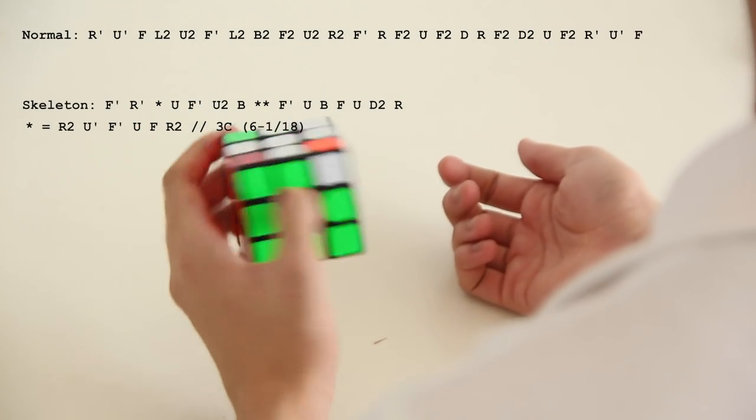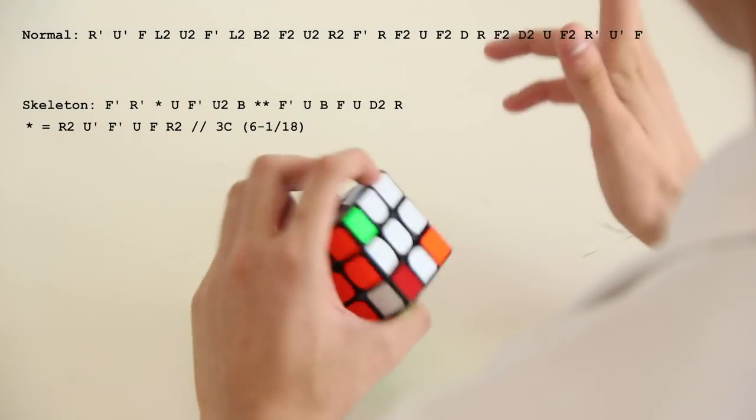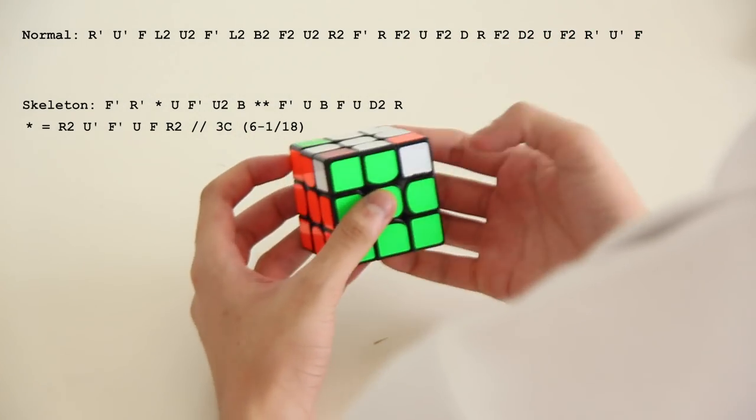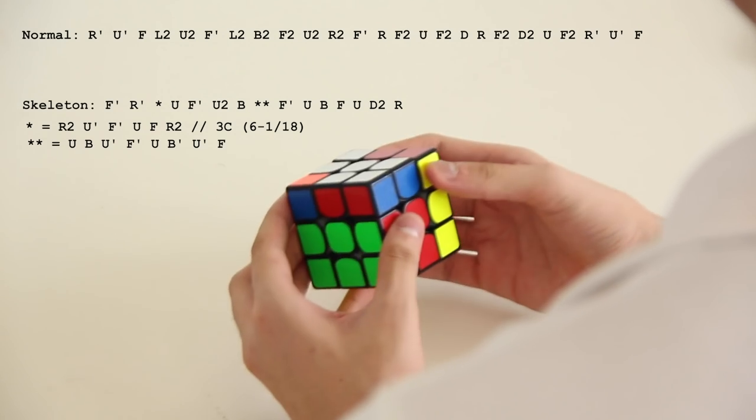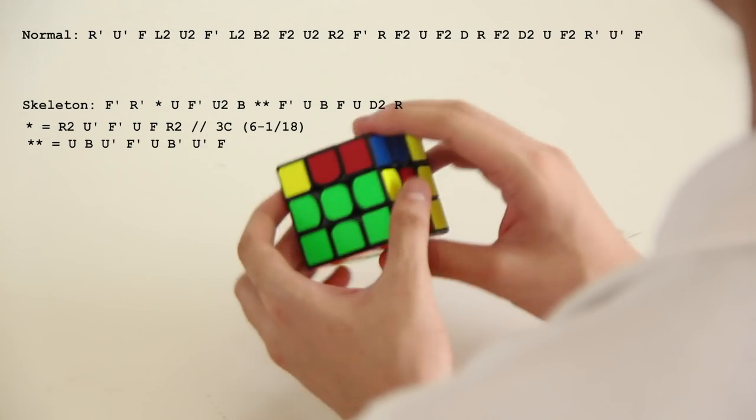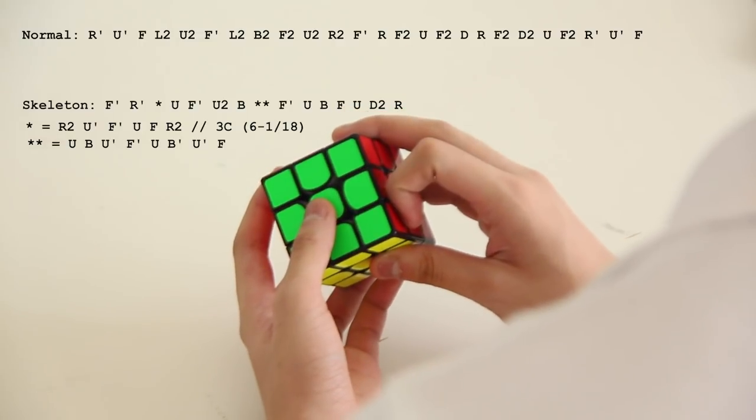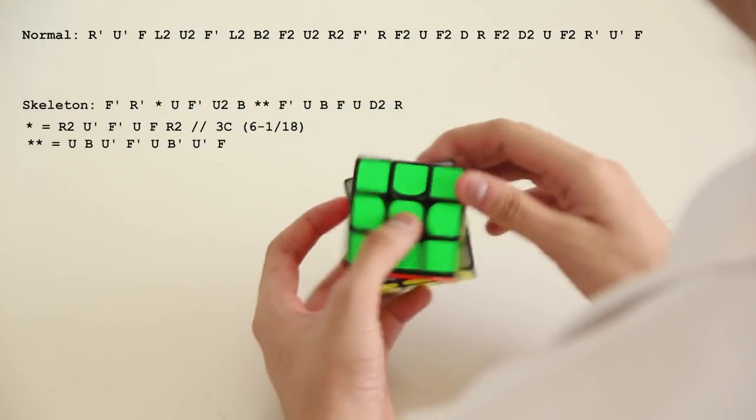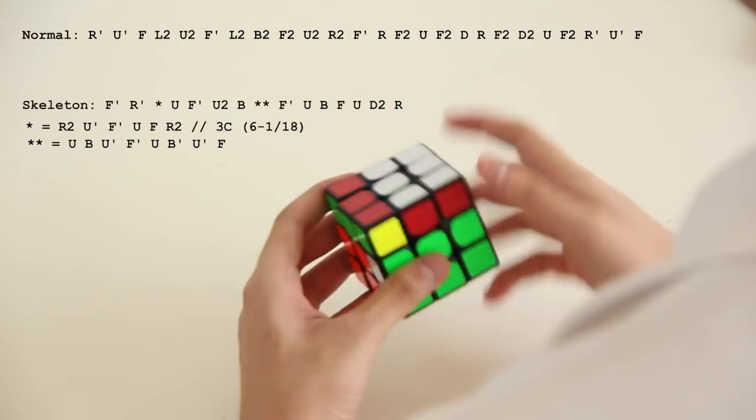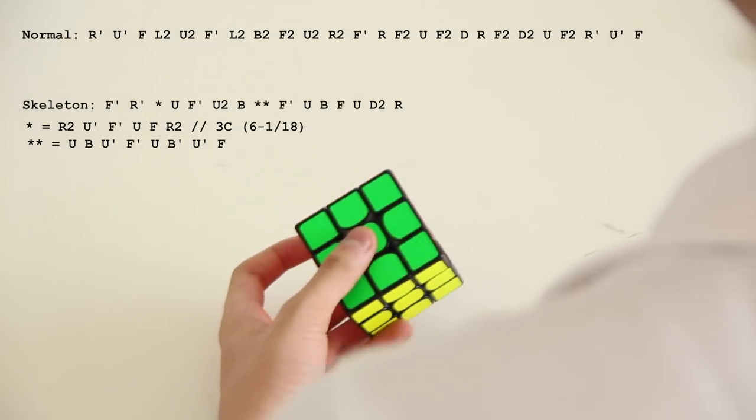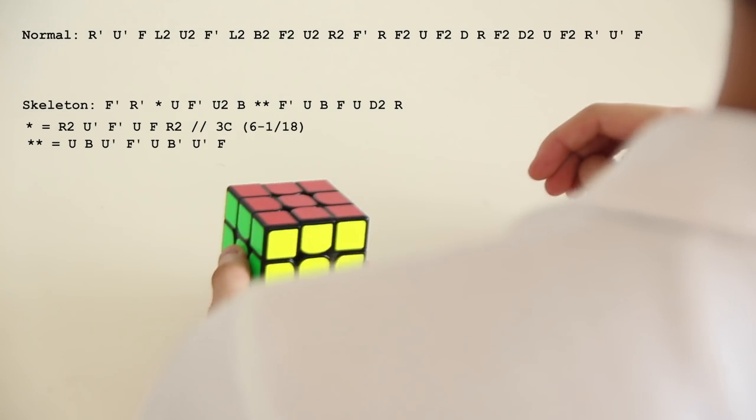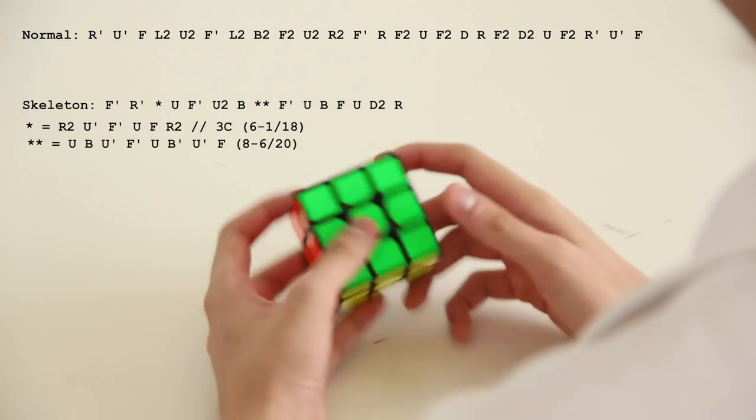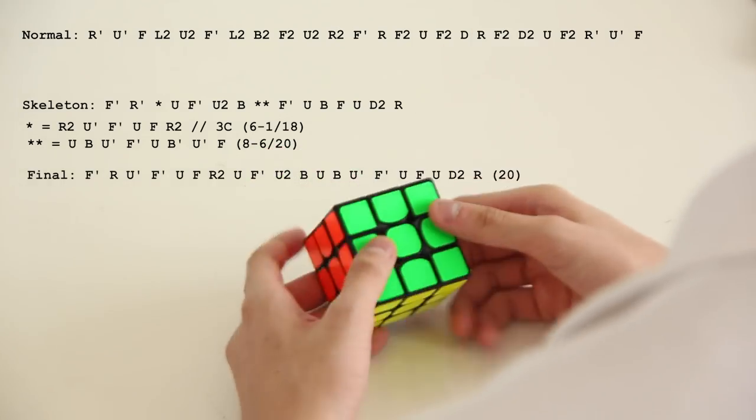In this spot, I pretty much just died after doing this insertion. So it's just a necklace, which goes U, B, U', F', U, B', U', F. Look at those last 3 moves, B', U', F. That exactly cancels with the next 3 moves in the skeleton, which gives a 6 move cancel and a final solution of 20 moves.